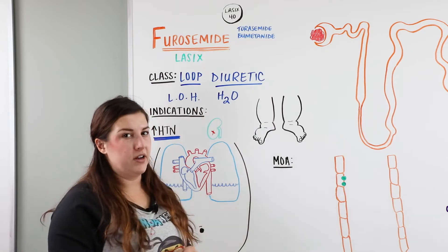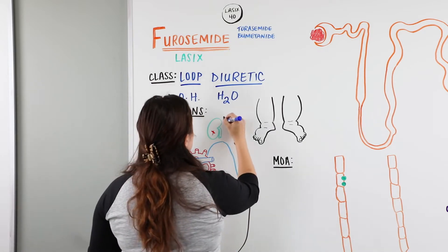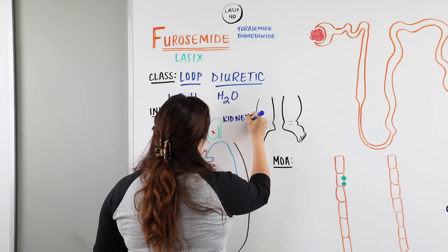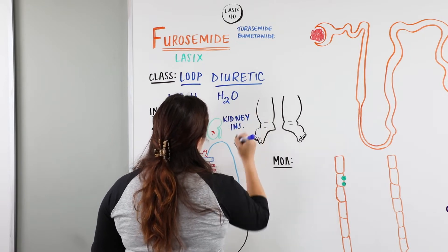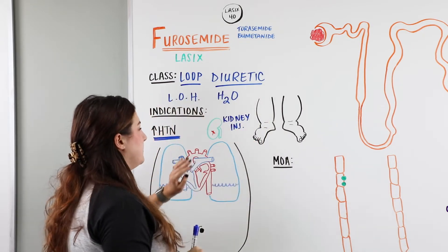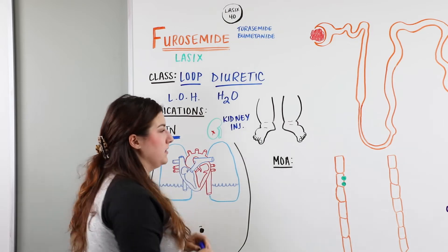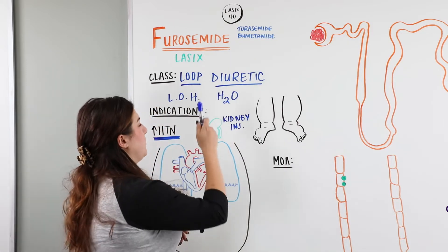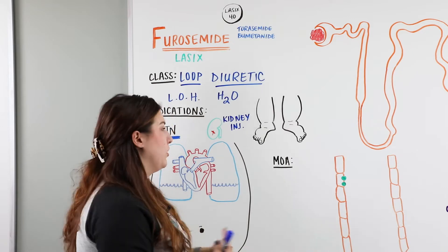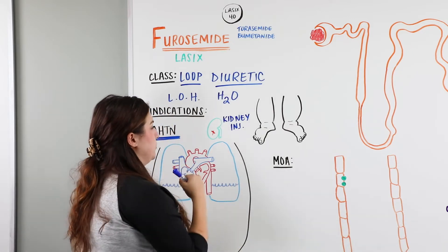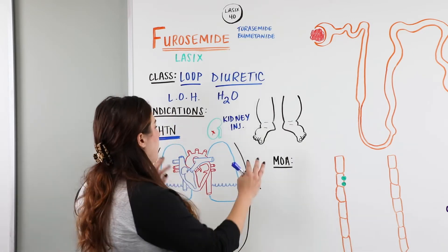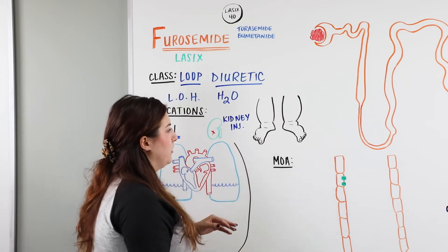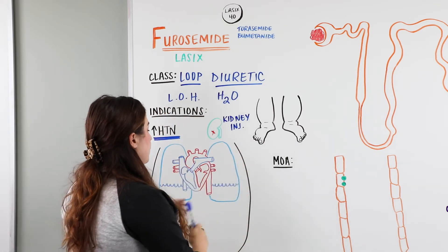The next indication is kidney injury. If a patient has some type of kidney injury, their kidney function might not be where we want it to be, so we're going to give them a medication that's going to help coax it along, improve kidney function, and help get that excess fluid out of the body.